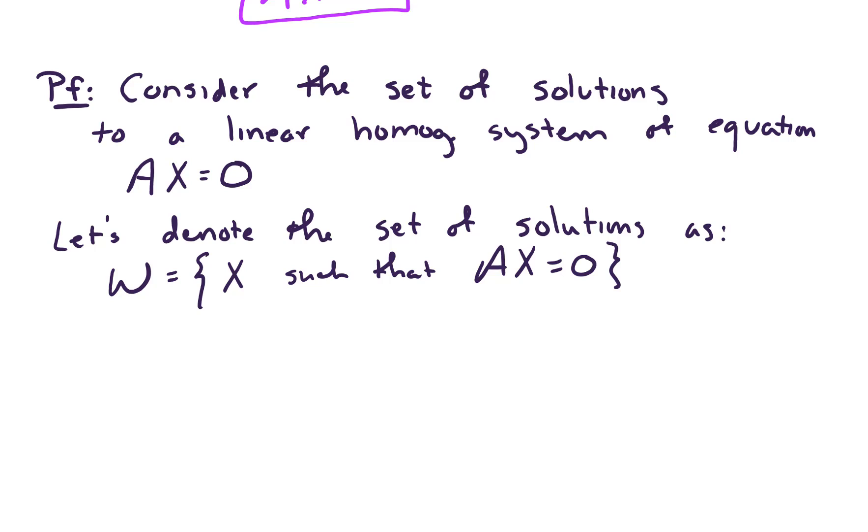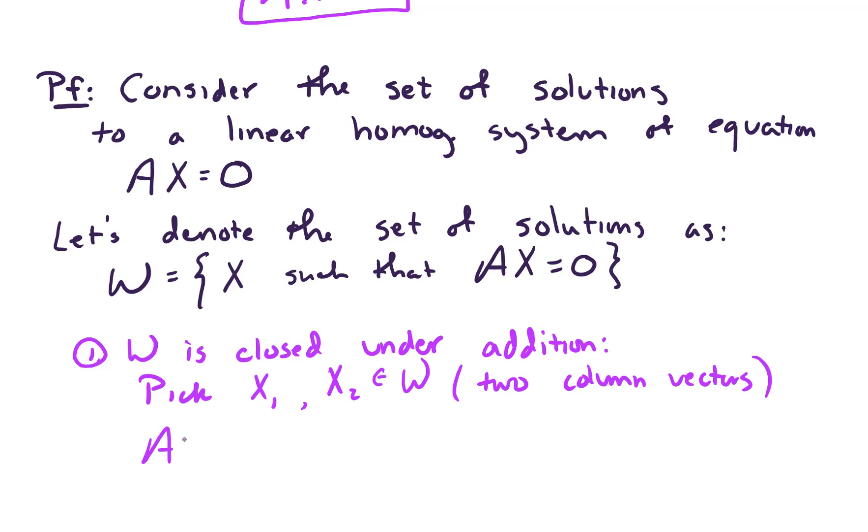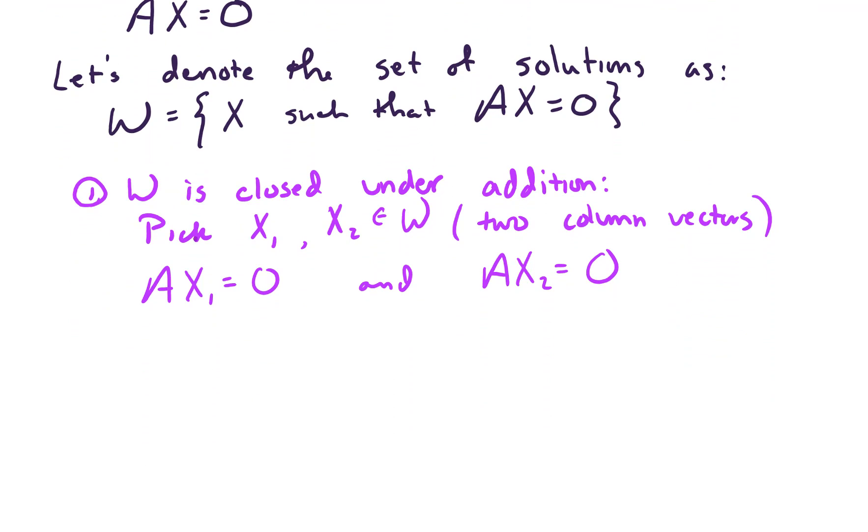To show that W is a subspace, we need to show two things hold. First of all, W is closed under addition. So let's pick two vectors that live in W. Let's pick a capital X1 and a capital X2. These are two column vectors that satisfy this equation. So let's pick X1 and X2 that live in W. In other words, A times X1 equals zero, and A times X2 equals zero by nature of living in W.